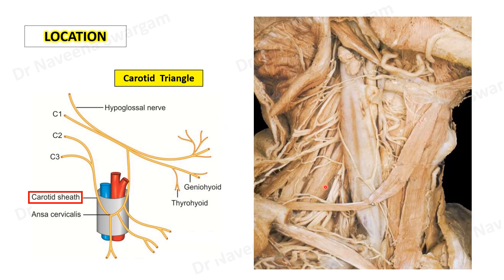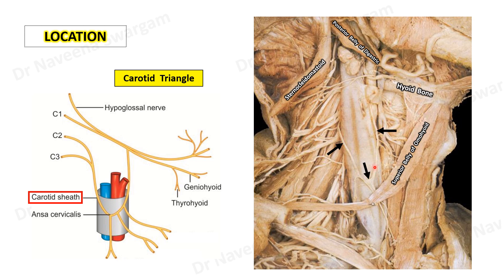Let's understand that from this image. Here is the sternocleidomastoid muscle, cut and reflected. Here is the hyoid bone with the posterior belly of digastric muscle, and here is the superior belly of omohyoid muscle, which form the boundaries of the carotid triangle within the anterior triangle of the neck. Here is the ansa cervicalis with its superior root and inferior root surrounding the contents of the carotid sheath, which are the internal jugular vein, common carotid artery, and vagus nerve lying deep to the vein.